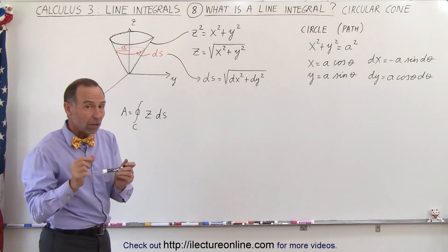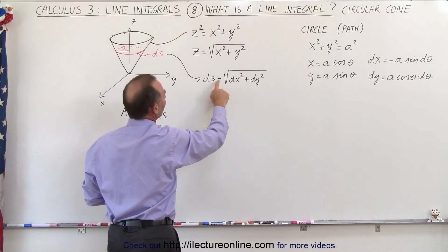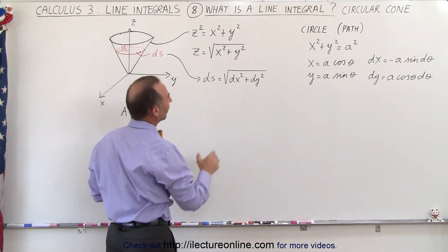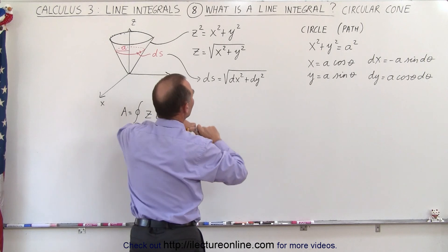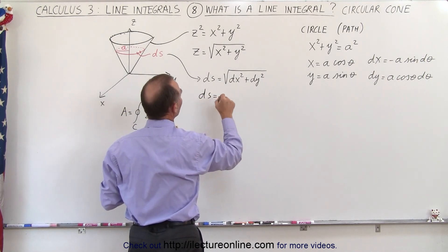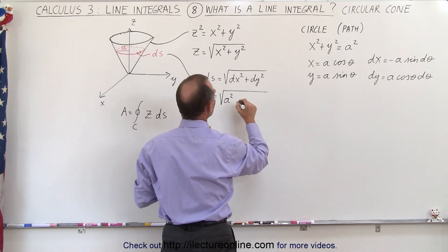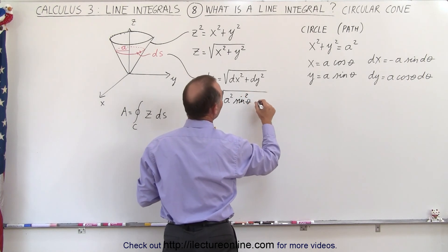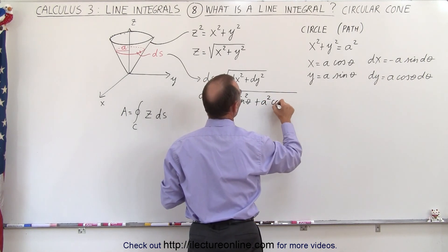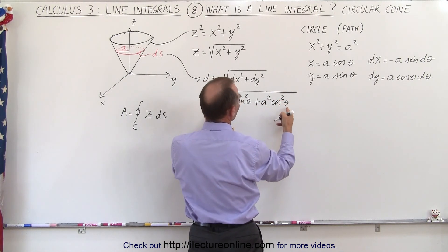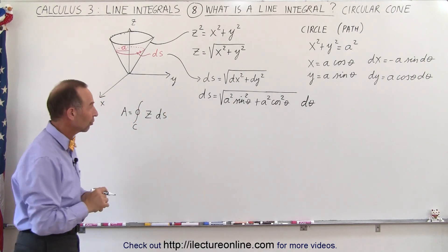A small segment ds along that path around the edge of the cone is going to be defined as the square root of dx squared plus dy squared. Since we now replace dx squared and dy squared by what they equal in the parametric equations, this can be written as: ds equals the square root of a squared times sine squared theta times d theta squared, plus a squared times cosine squared theta times d theta squared. We can factor out d theta squared and write d theta, and also factor out an a.